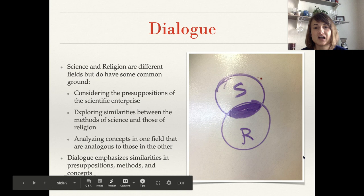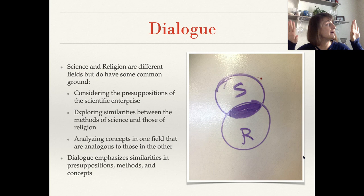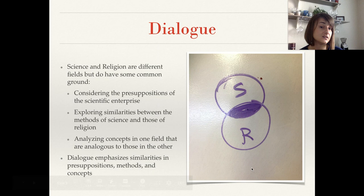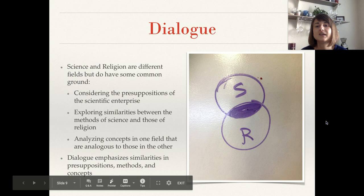Next up, we have the dialogue model. The dialogue model says that science and religion are different fields — they really do ask different questions and have different methods — but they do have some overlapping ground. As opposed to the independence model where science and religion were separate with a wall in between them, here it's like a Venn diagram: science-specific stuff on one side, religion-specific stuff on the other, but there is some overlap where science and religion can kind of talk to each other.